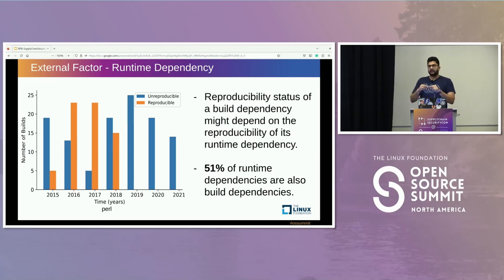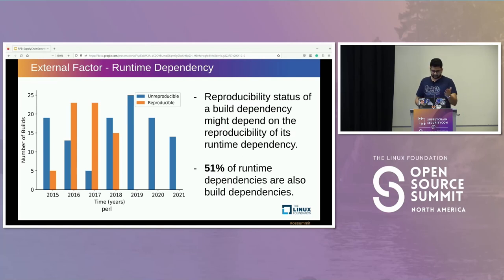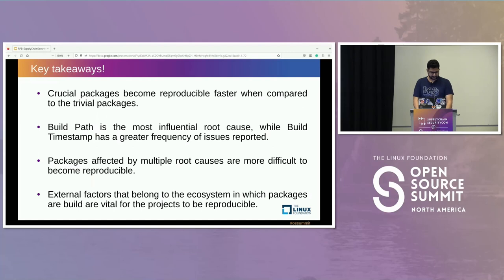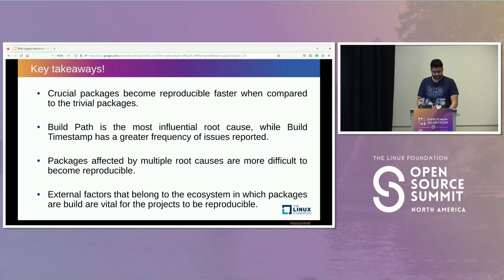The next external factor is runtime dependency — specifically, the runtime dependency of the build dependencies used. The runtime dependency of a build dependency is also a factor on which reproducibility of packages depends. We found that 51% of runtime dependencies are also build dependencies. In conclusion, packages which have dual responsibilities of being both runtime dependencies and build dependencies must be prioritized for becoming reproducible. External factors that belong to the ecosystem in which packages are built are vital to the project being reproducible.